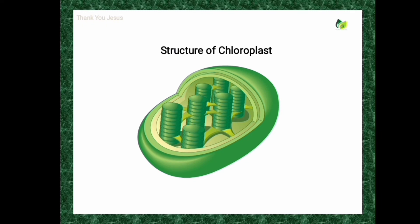The inner membrane is selectively permeable. The two membranes are separated by a space called the periplastidial space — this is the space between the outer chloroplast membrane and the inner chloroplast membrane.